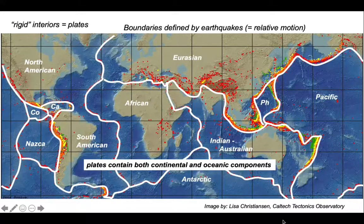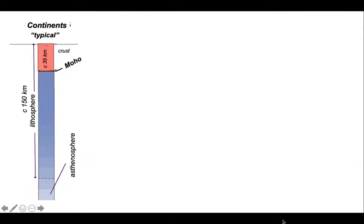But what about the base of the plates? Let's look down inside part of a plate that contains a continent. In this profile we have the crust forming the outer part of the plate; the base of the crust is the Moho. But the rest of the plate consists of mantle. This mantle and the crustal veneer constitutes the lithosphere, and it's underlain by more mantle which is the asthenosphere.